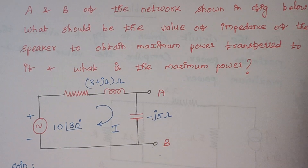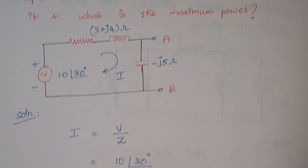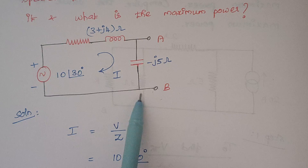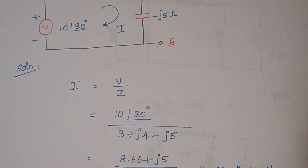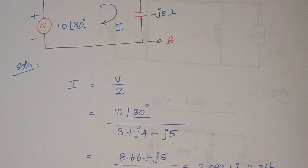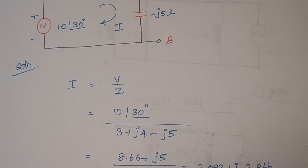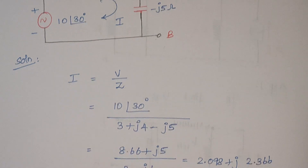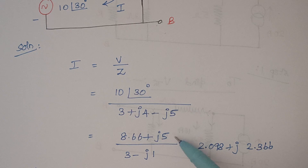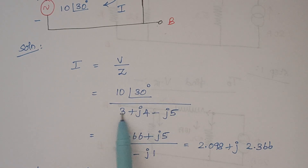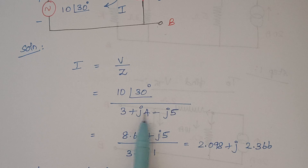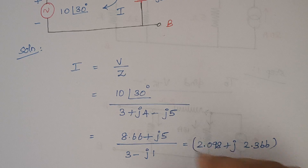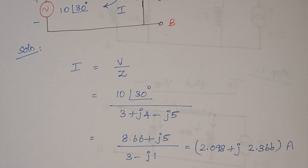The value of I is given by V by Z. So V is 10 with an angle of 30 degrees and Z is 3 plus J4 minus J5. Since I am having rectangular coordinates, I am converting this polar form into rectangular form. So our answer is 8.66 plus J5 divided by — when you solve, 3 and minus J5 plus J4 gives minus J1. This is the value of current.